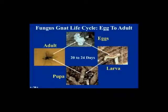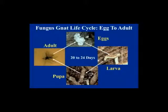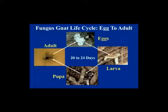The overall life cycle of the fungus gnat: eggs laid in clusters hatch into larvae, then they go through a pupal stage and come out as adults. Under the conditions where poinsettias are grown from August to November, it takes about 20 to 24 days for the life cycle to be completed.